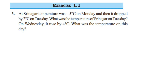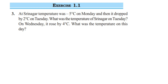This is a question on Exercise 1.1, third question, chapter Integers of Class 7. The question: at Srinagar, temperature was minus 5 degrees Celsius on Monday, then it dropped by 2 degrees Celsius on Tuesday. What was the temperature on Tuesday? On Wednesday it rose by 4 degrees Celsius — what was the temperature on that day?